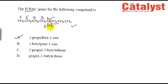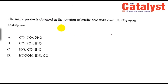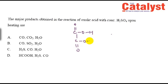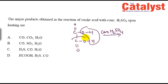The correct approach is to identify the longest chain as hexene with a propyl substituent. Let's move to the next question: the major products obtained in the reaction of oxalic acid with concentrated H2SO4. Oxalic acid is (COOH)2; with concentrated H2SO4, dehydration occurs.